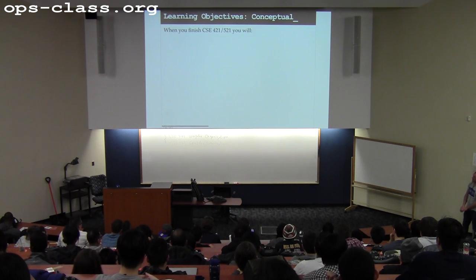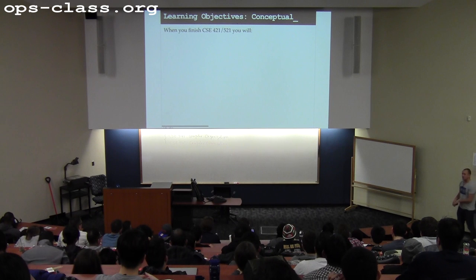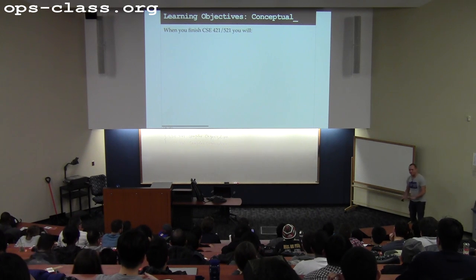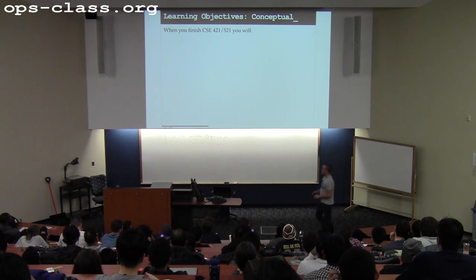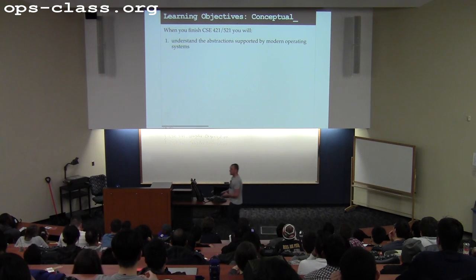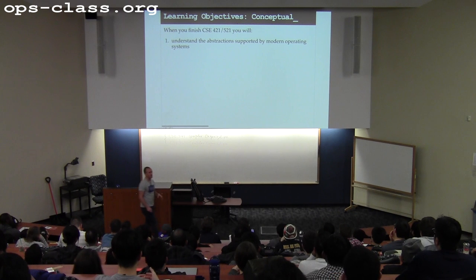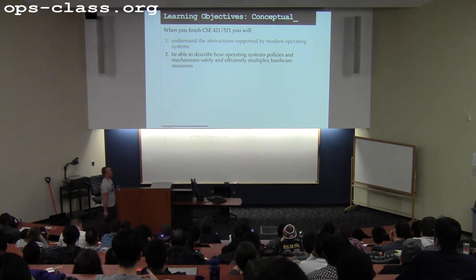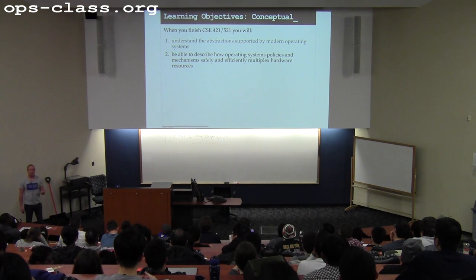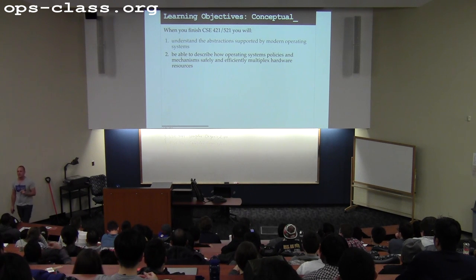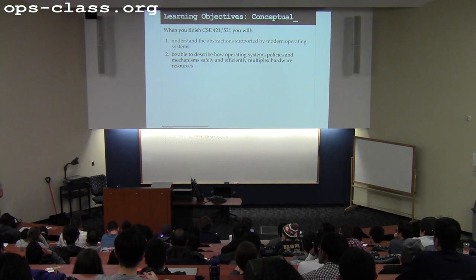You're going to write a lot of code. My objective is for you, when you're done with this class, to understand the abstractions that are provided by modern operating systems. You'll be able to talk about and explain how operating systems multiplex resources — these are the ideas you're going to carry forward that will help you write better code in the future.